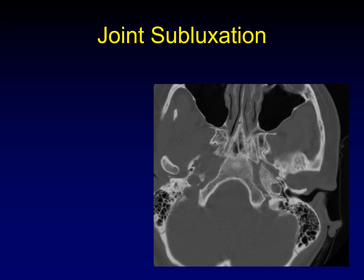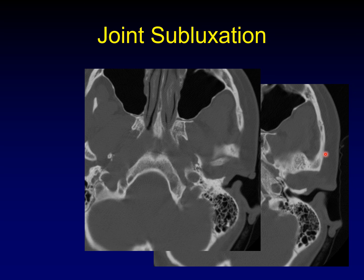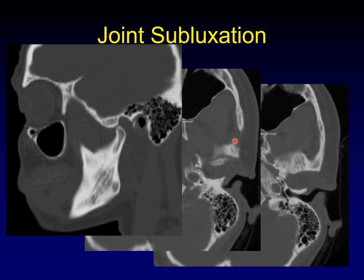Subluxation refers to anterior displacement of the condylar head that doesn't fully clear the articular eminence but is too far forward for a closed-mouth patient whose teeth are touching. In subluxation, the glenoid fossa may appear empty on one side, but the condylar head hasn't jumped entirely in front of the articular eminence. This is often easier to appreciate on sagittal reformatted images where the condylar head is no longer seated properly in the glenoid fossa.